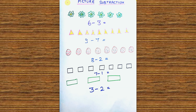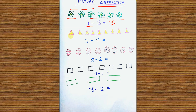Then this is my second worksheet. This is picture subtraction — just like there is picture addition, here is picture subtraction. Whatever the bigger digit is, you will have to make images. Just like this, I have made 6 flowers, so it will count as 6 flowers, then it will count as 3.